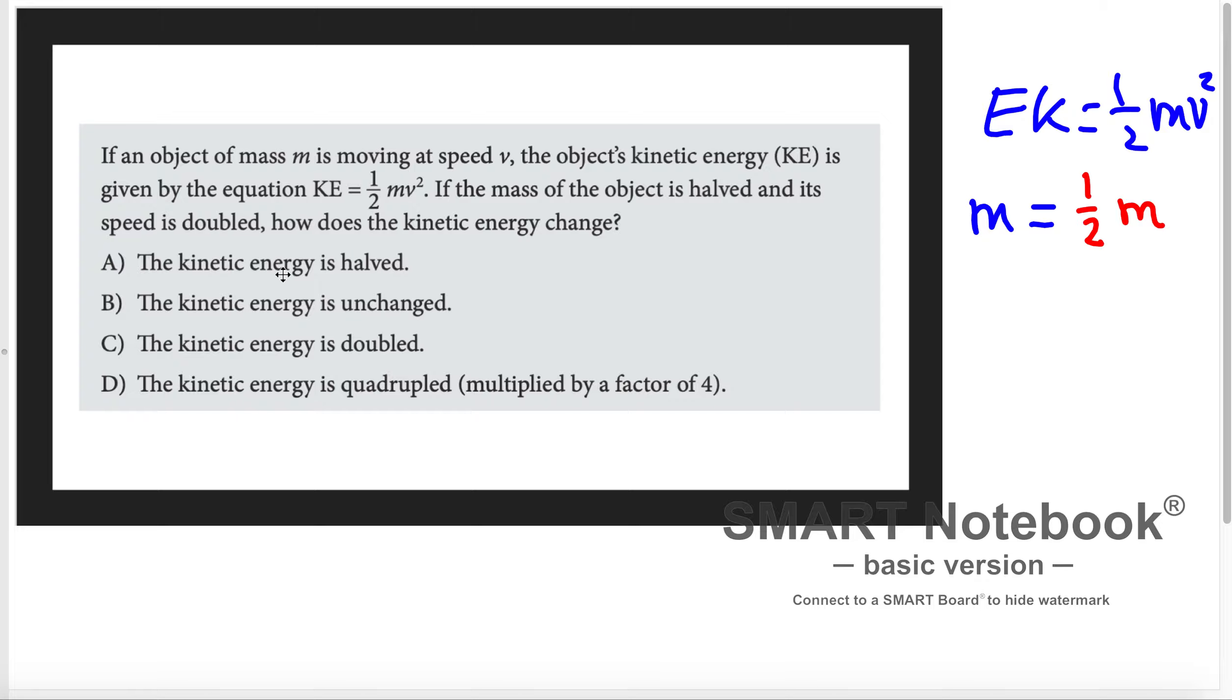And now it says here that speed is doubled. So let's say speed here is v, is doubled, so let me write the new speed is doubled, this is 2v.